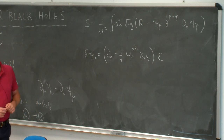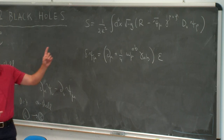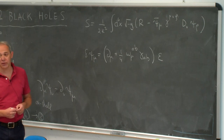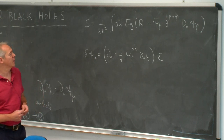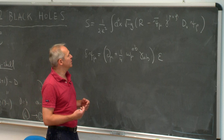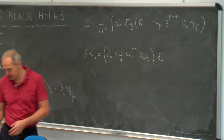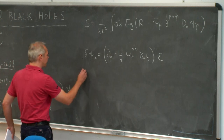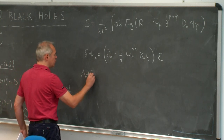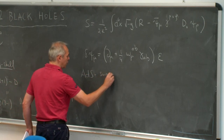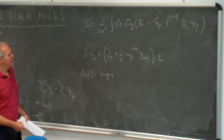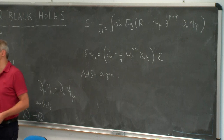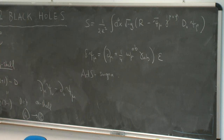The Schwarzschild and Kerr solutions are solutions of this theory, but they don't preserve any supersymmetry — there is no epsilon for which they leave the solution invariant. Even the extreme Kerr solution is not a BPS solution of this theory. You can also add additional terms and construct, with the same fields, a supergravity theory that lives in anti-de Sitter space. So we can extend this to AdS supergravity, which is just a deformation — later we'll see this deformation is a gauging.